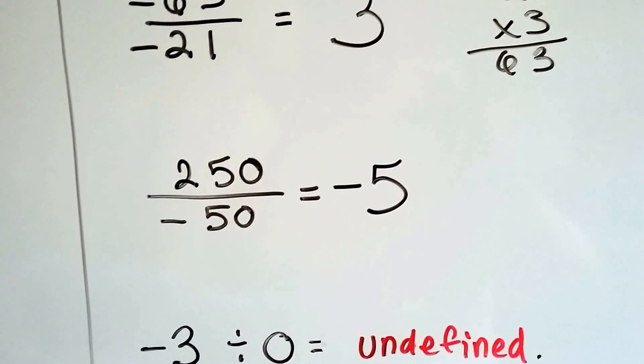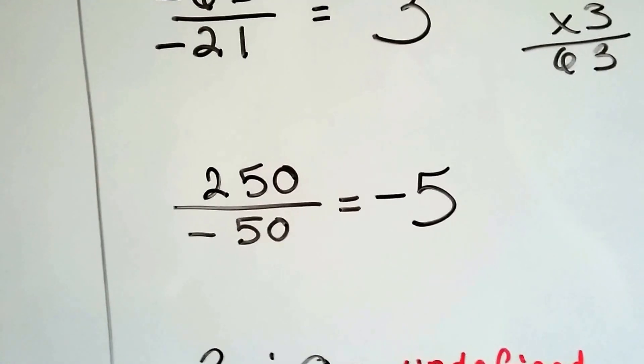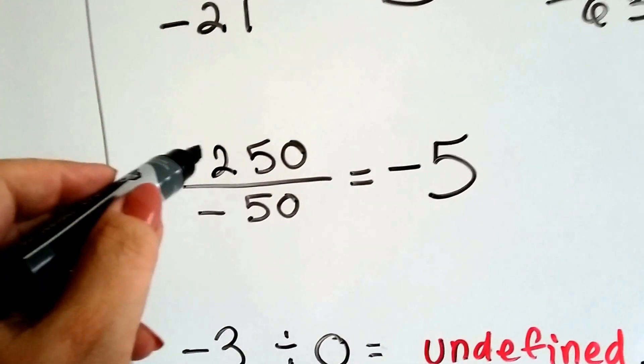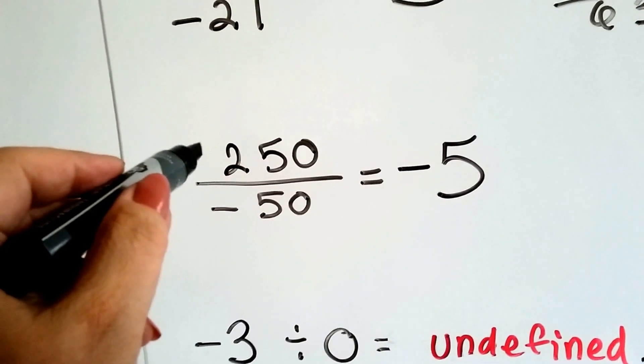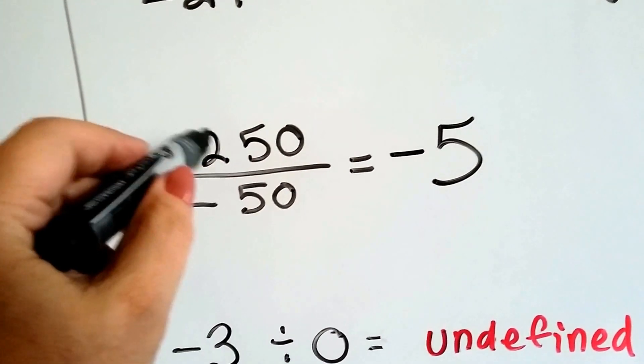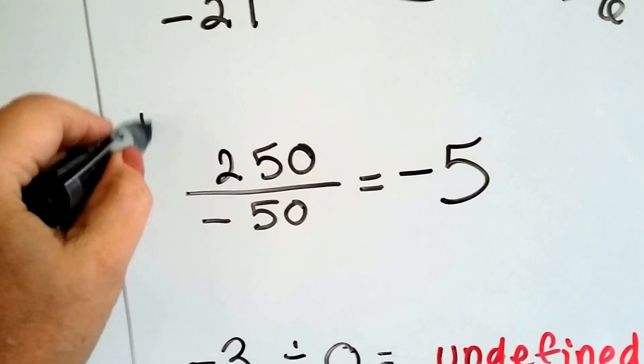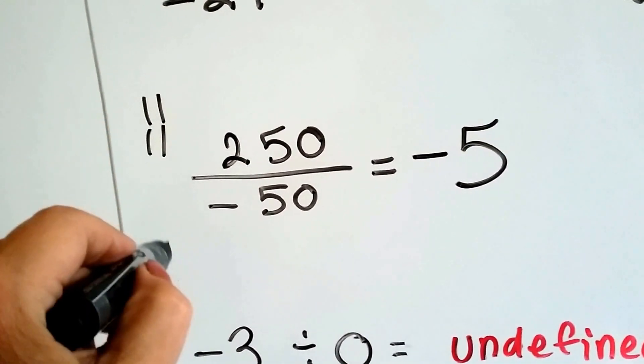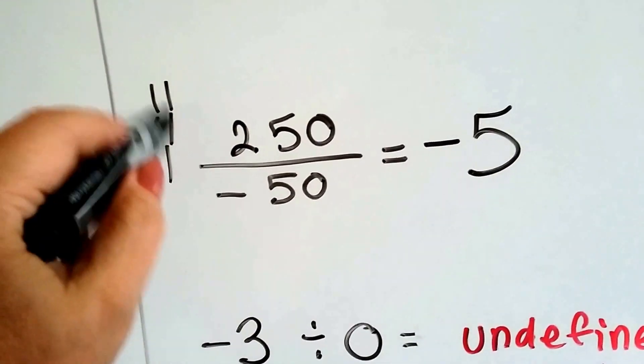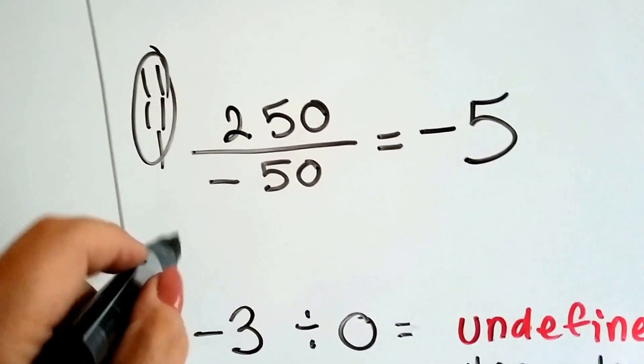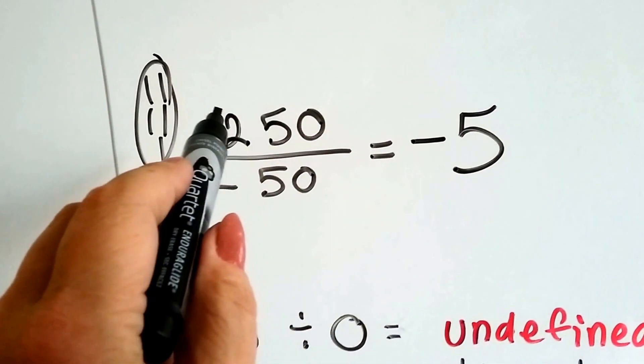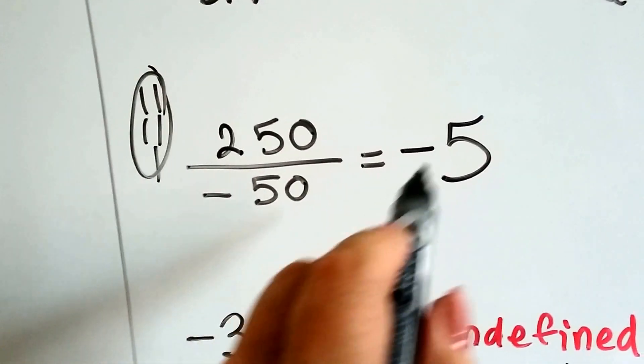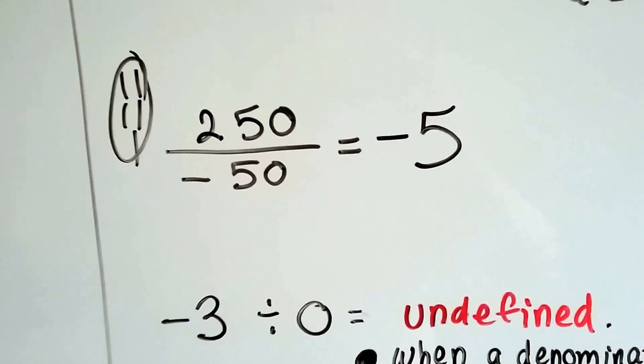What about 250 divided by a negative 50? Well, there's two 50s in each 100, right? And we have 200. So there's, that's 100. That's 200. And then another 50 is 250. That makes five of them, doesn't it? So, because this is a positive and that's a negative, they're unlike, it's going to be a negative 5. Alright?